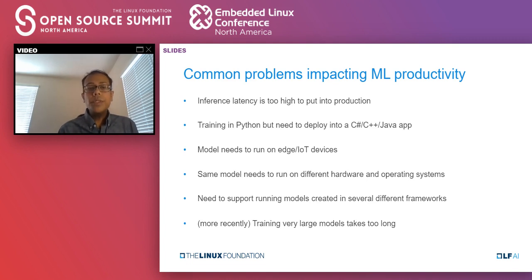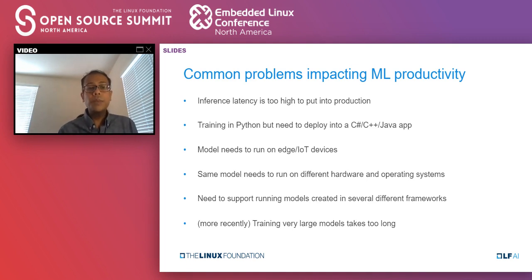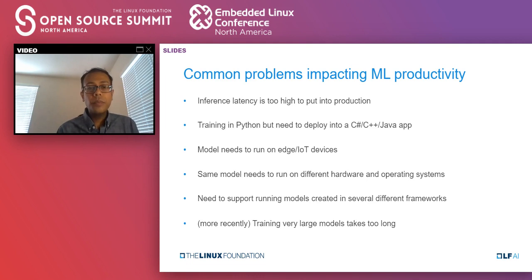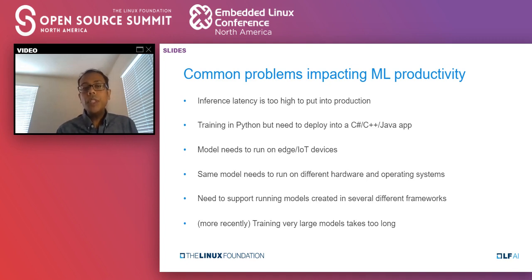Another issue was that some teams needed to take models from different people using different frameworks and run them all in their product — products like Windows or SQL Server whose customers use a variety of tools and formats. More recently, especially with the popularity of transformer models for natural language processing, training very large models takes too long and also impacts agility. All of these items were basically impacting machine learning productivity for our data scientists and developers.